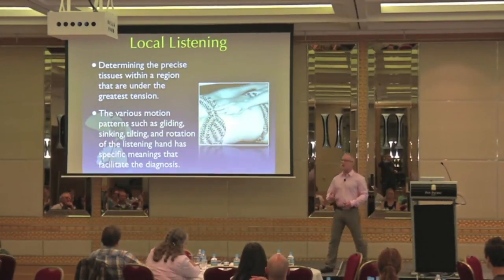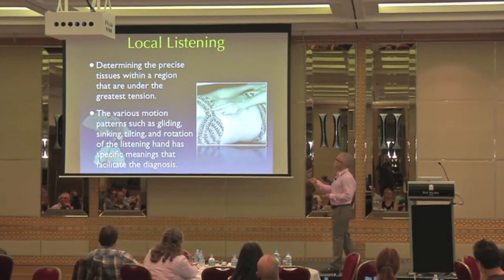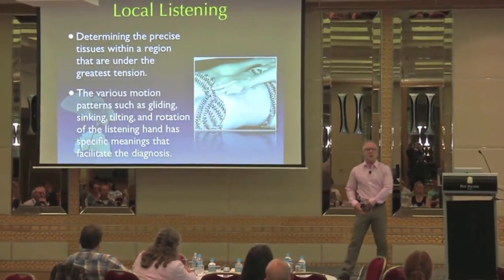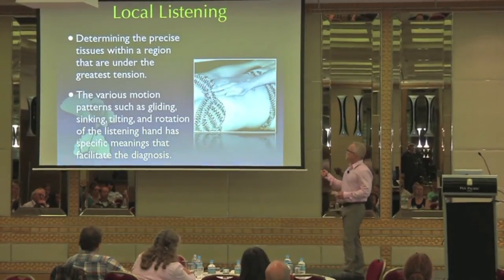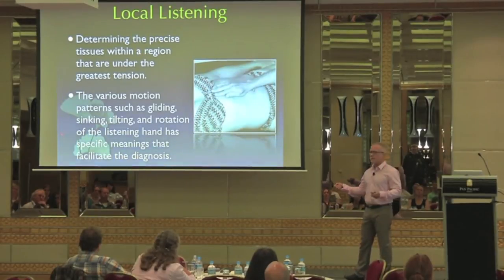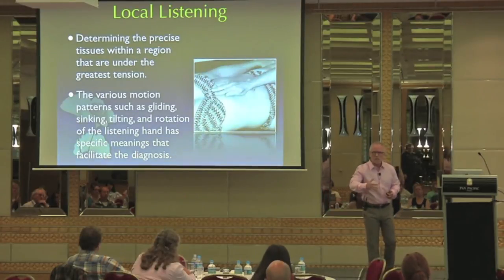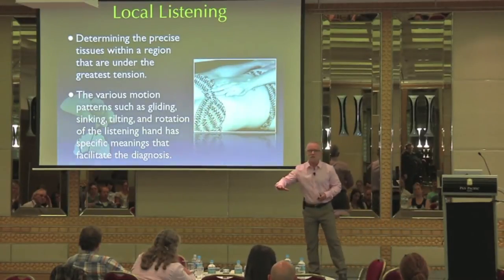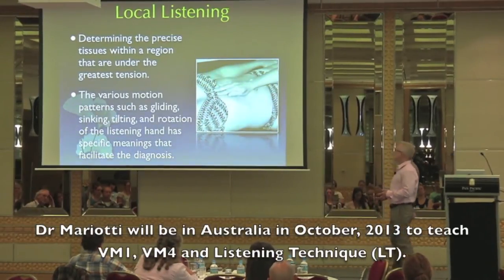Local listening, after you've gotten that general pattern of where it's occurring, gives you the details. You're determining the precise tissues within a region. Let's say your general listening took you to the cecum area because the patient had a chronic history of appendicitis, or maybe had their appendix removed. Jean-Pierre has defined various patterns through his vast experience — gliding, sinking, tilting, rotation — they all give a very specific meaning in the tissues. Fascia glides; if it's a solid organ, it's going to rotate your hand around something.